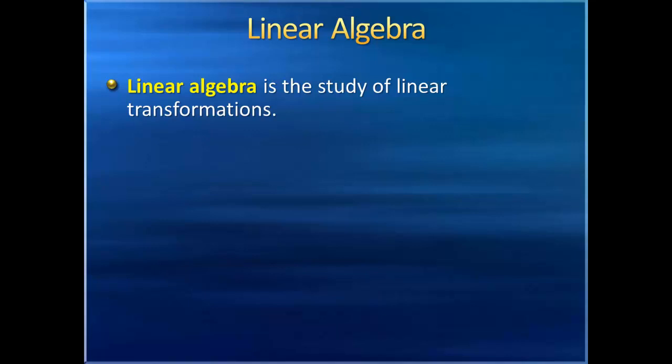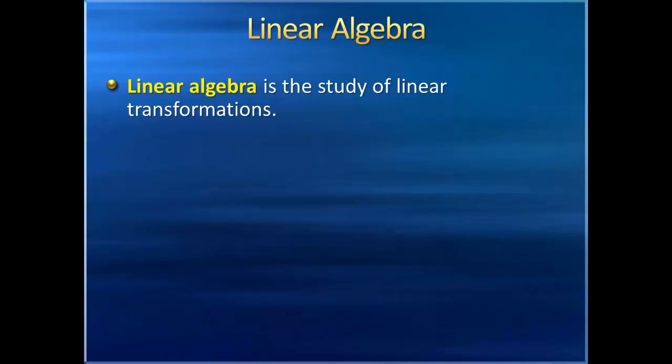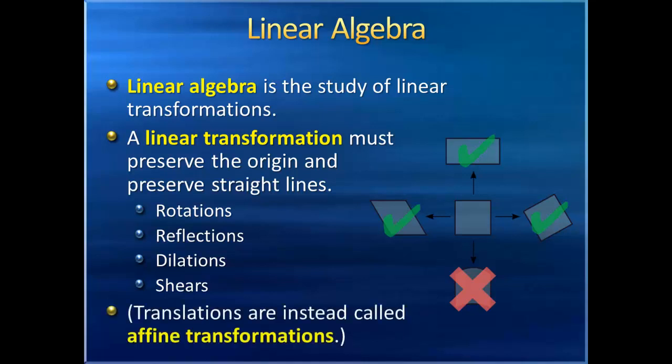Not only can we rotate or reflect it, we can stretch it, we can squish it, we can translate it, we can shear it, we can bend it, we can twist it, we can flatten it, we can even reduce it to a single point. To be a linear transformation, a transformation must preserve the origin and preserve straight lines. This means we don't usually talk about translations as linear transformations. Those are actually called affine transformations, but they do have their uses as well.